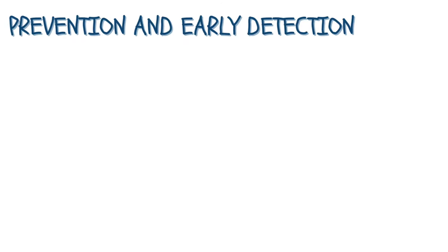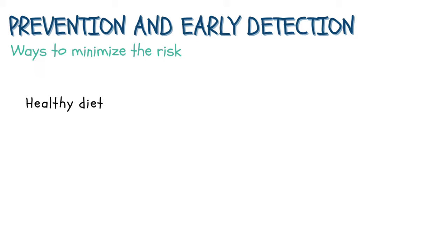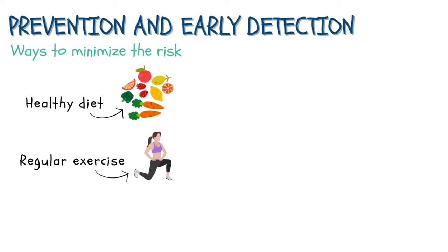There is no method that prevents colorectal cancer 100%. However, there are ways to minimize the likelihood of colorectal cancer development and progression. Steps to reduce the risk of cancer development include maintaining a healthy diet — eating plenty of fruits, vegetables, and whole grains — as well as limiting red and processed meats, and being physically active with 30 to 60 minutes of moderate exercise a day, 5 days a week.